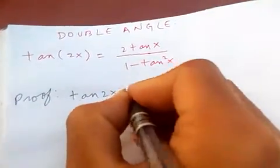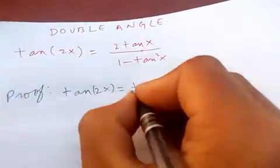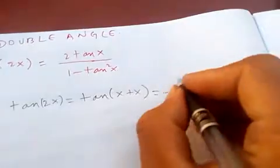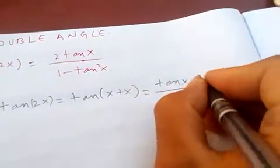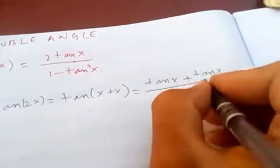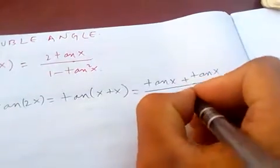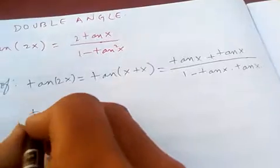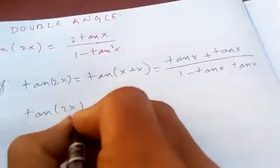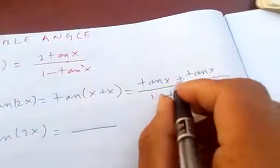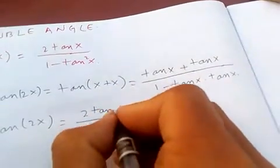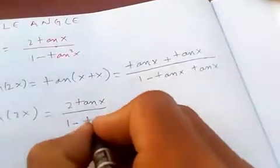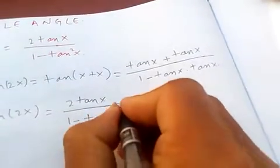tan(2x) is just the same as tan(x + x). We know that tan(a + b) = (tan(a) + tan(b)) / (1 - tan(a)·tan(b)). So tan(2x) = (tan(x) + tan(x)) / (1 - tan(x)·tan(x)), which is 2tan(x) / (1 - tan²(x)). So we have proved it.